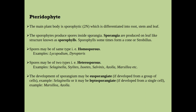The sporophyte produces spores inside sporangia. Sporangia are produced on leaf-like structures known as sporophylls, and sometimes sporophylls form a cone or a strobilus. Spores may be of the same type, that is homosporous — for example Lycopodium and Rapturis — or spores may be of two types, that is heterosporous. This heterospory leads to the formation of seed habit, and in gymnosperms, they will produce seeds.